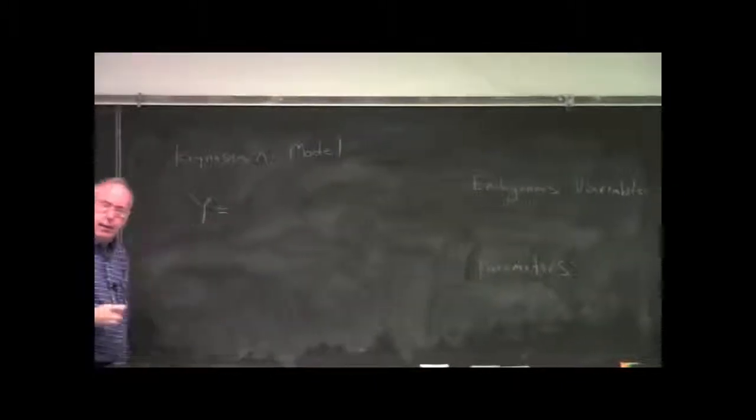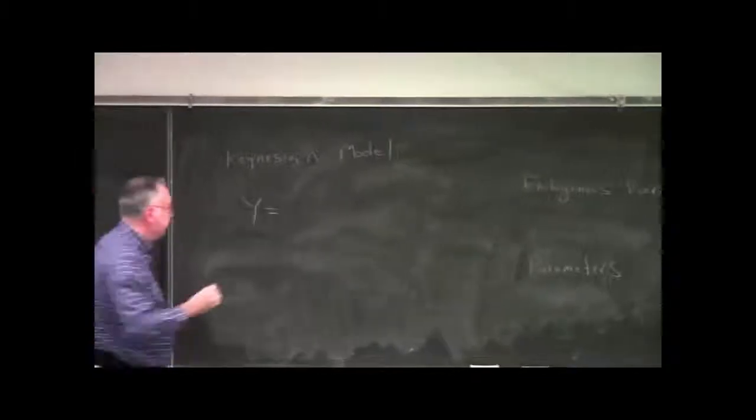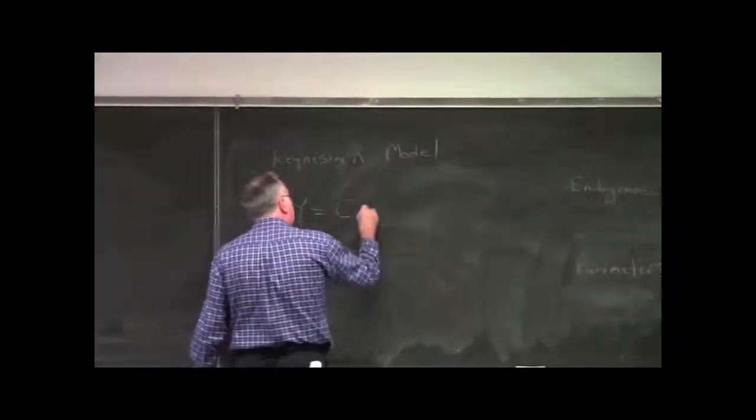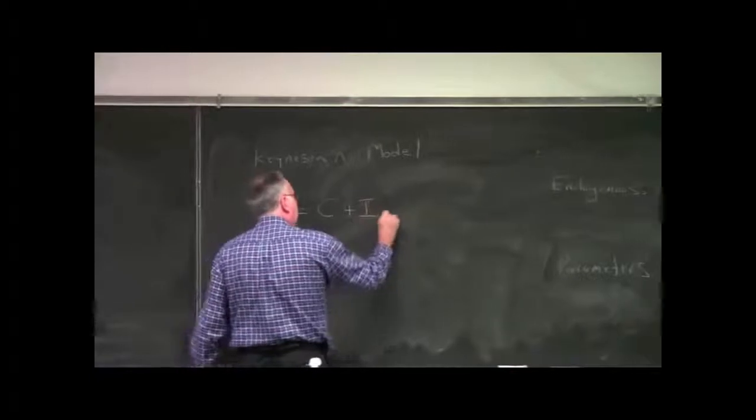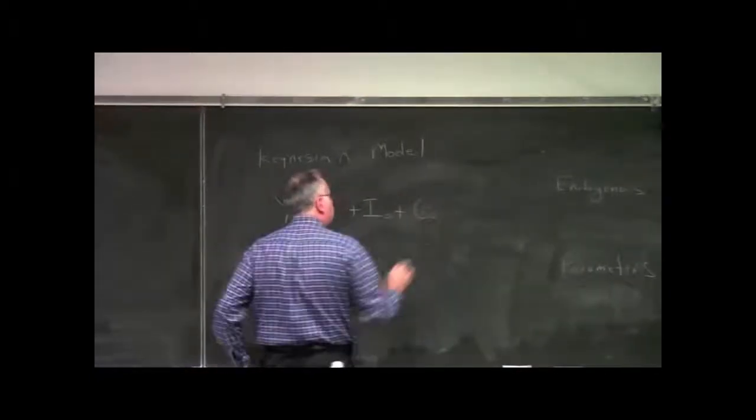Y, national income, equals C plus I plus G, where C is consumption expenditure, I is investment expenditures, expenditures on plant and equipment, and G is government expenditure.